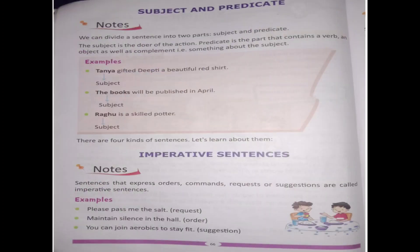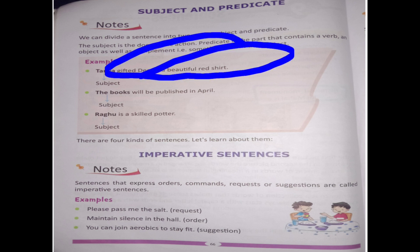Let's discuss subject and predicate. We can divide a sentence into two parts: subject and predicate. The subject is the doer of the action — kriya ko karne wala karta hota hai, aur usi ko hum subject kehte hain. For example, 'Tania gifted a beautiful red shirt.' Tania ne gift karne ka kaam kiya, toh Tania subject hai.